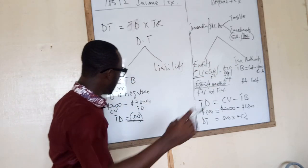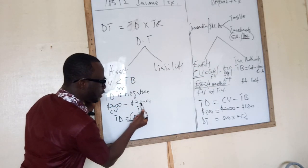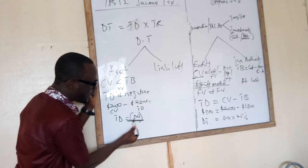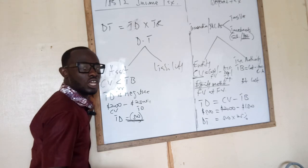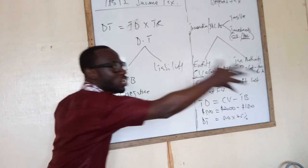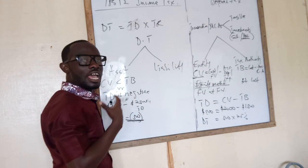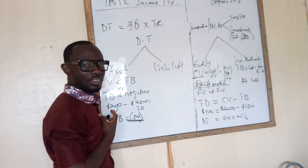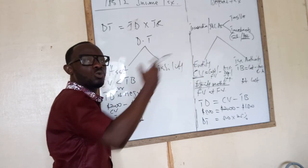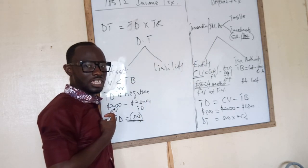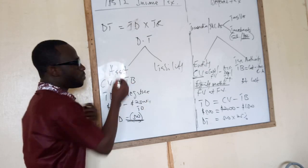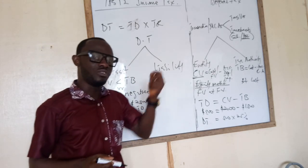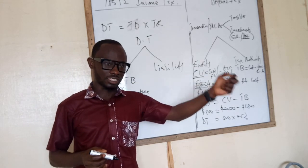Why? Because you are telling the tax authority that if you sell this asset, you will make a loss. And if you are making a loss, then you will claim a tax difference. The tax authority will grant you the tax relief on that loss that you are making. That is why it becomes a deferred tax asset.